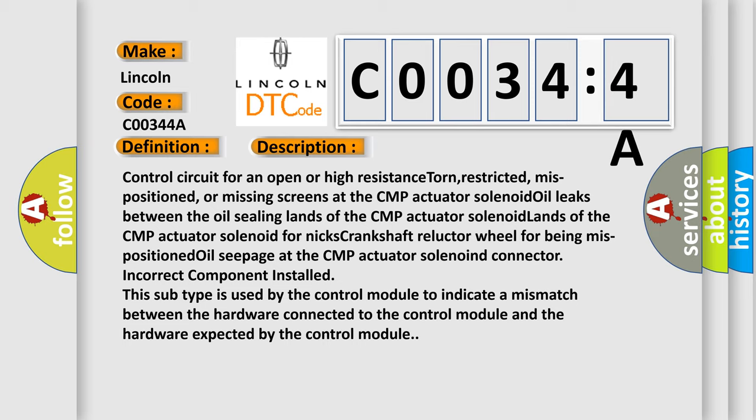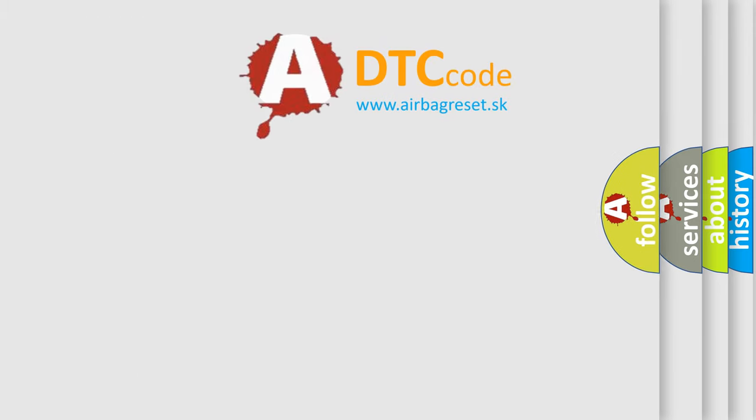Crankshaft reluctor wheel for being mispositioned oil seepage at the CMP actuator solenoid connector. Incorrect component installed. This subtype is used by the control module to indicate a mismatch between the hardware connected to the control module and the hardware expected by the control module. The airbag reset website aims to provide information in 52 languages.